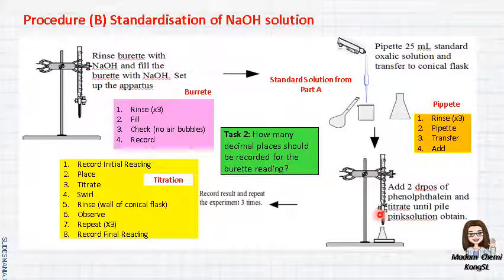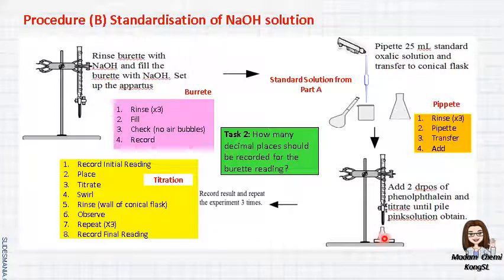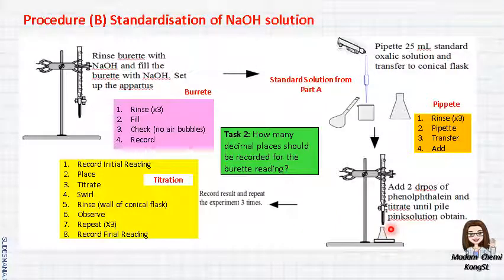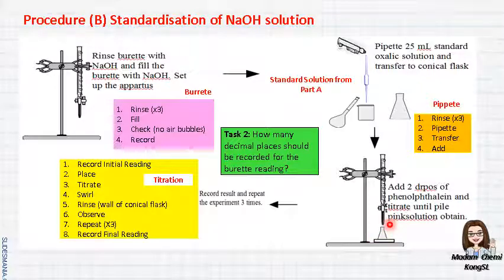Then you can start to titrate. During titration, you have to swirl the conical flask. At the halfway point, you can stop a while to rinse the wall of the conical flask with distilled water to ensure that all the sodium hydroxide mixes with the oxalic acid. From time to time, observe the changes in color of the solution — is it starting to change to light pink or light purple? If yes, you have to continue your titration drop by drop.